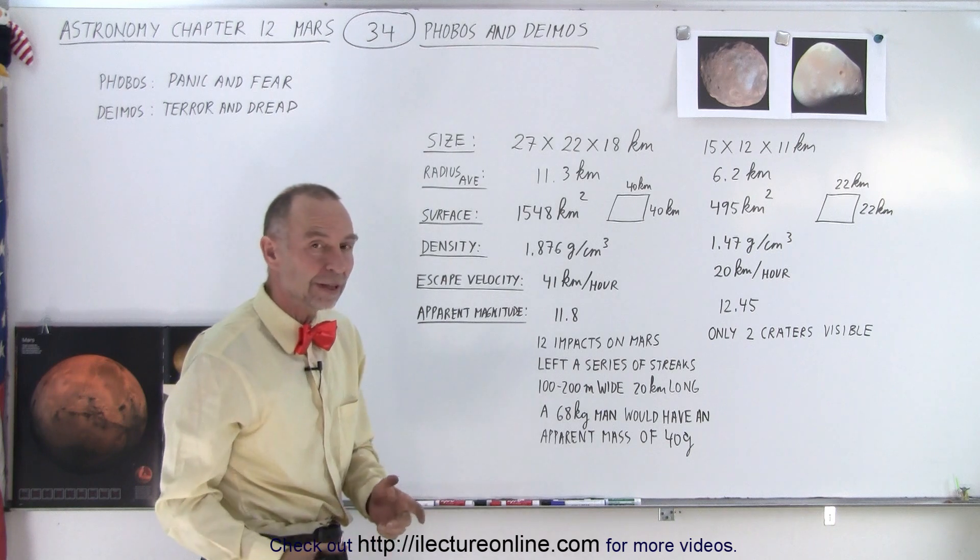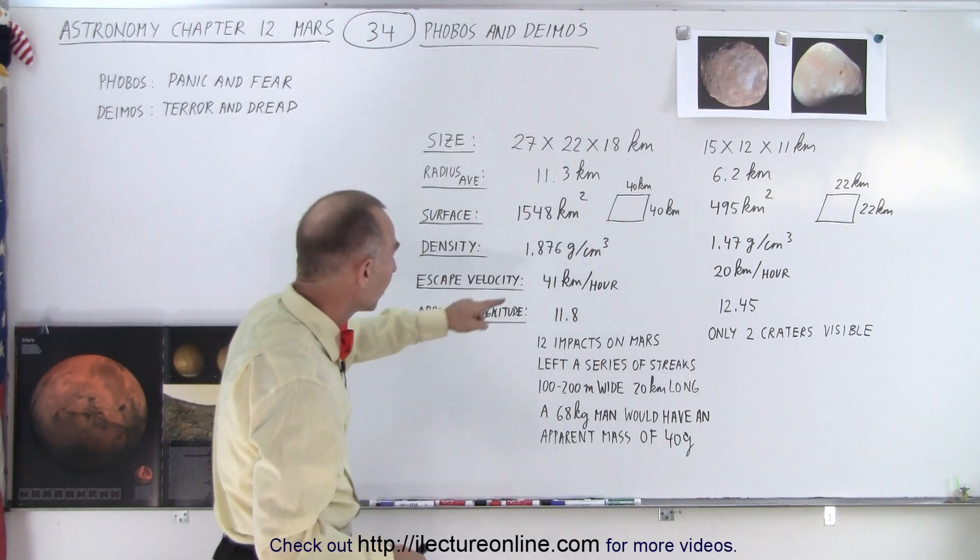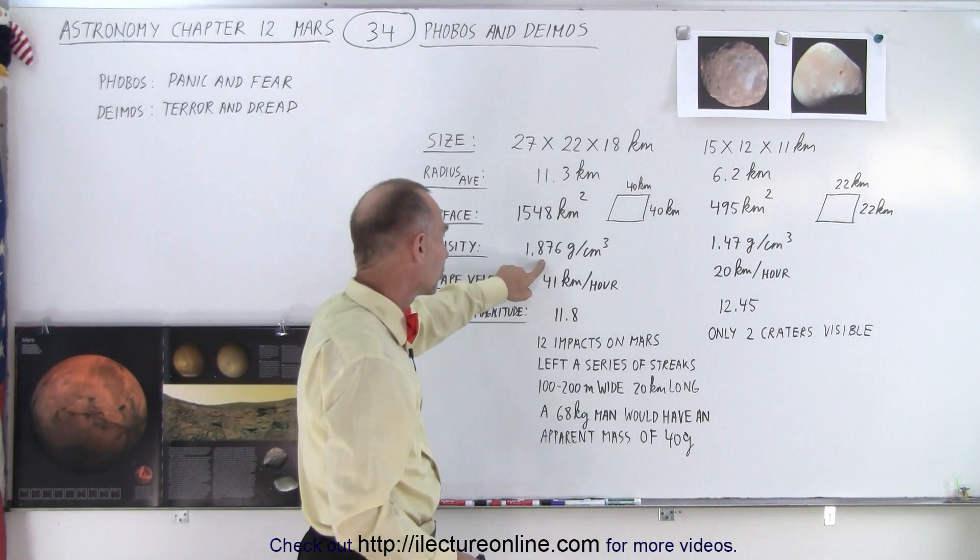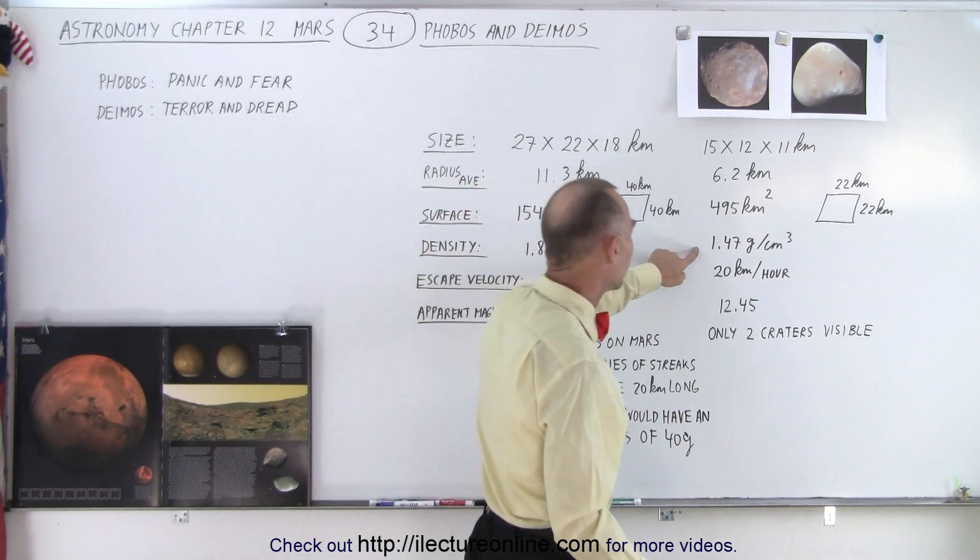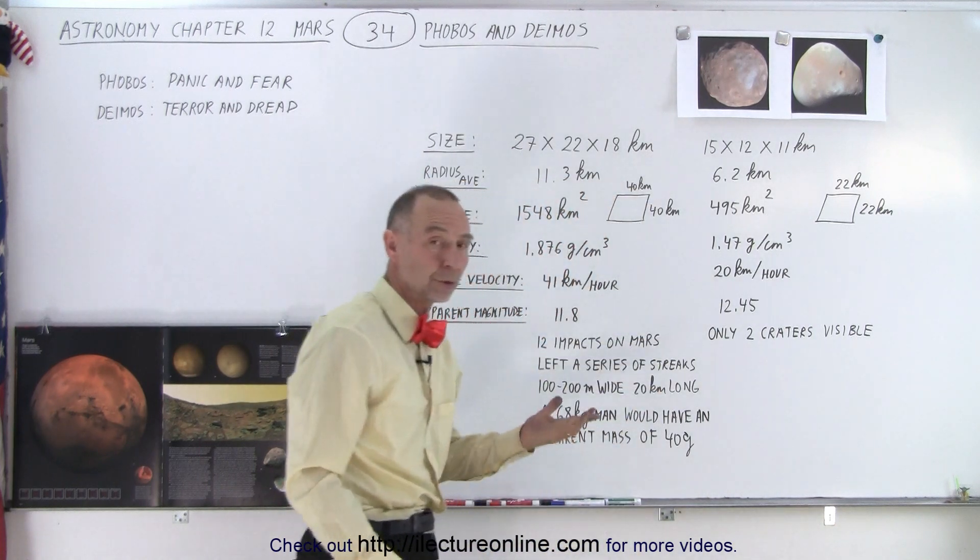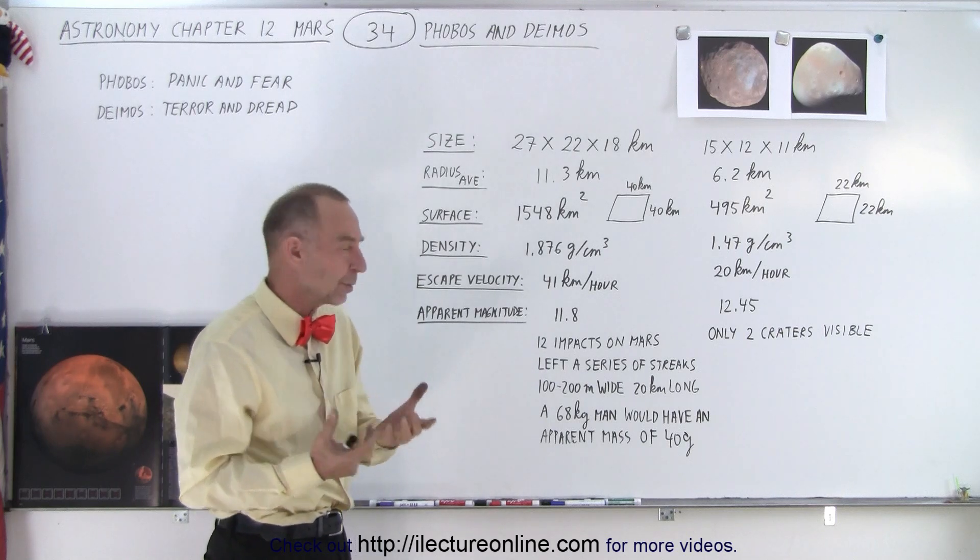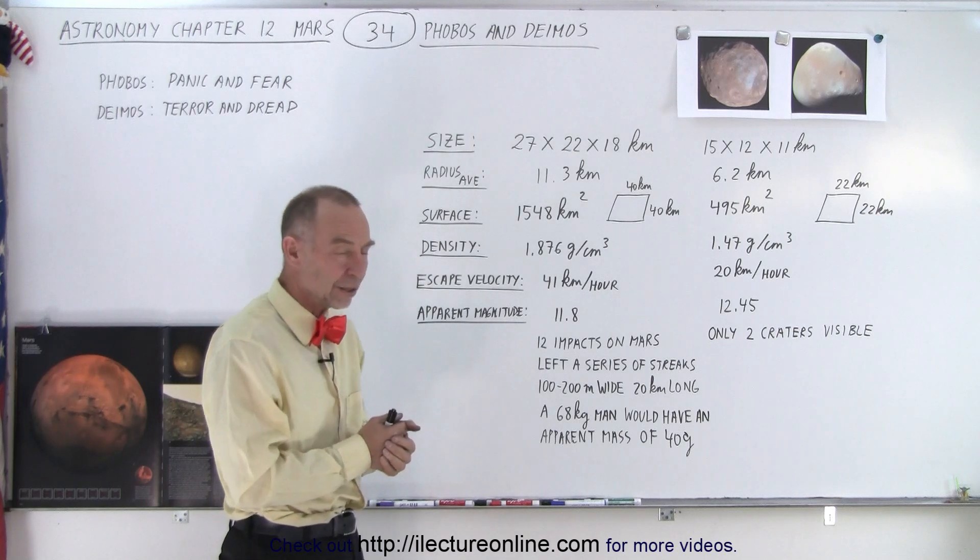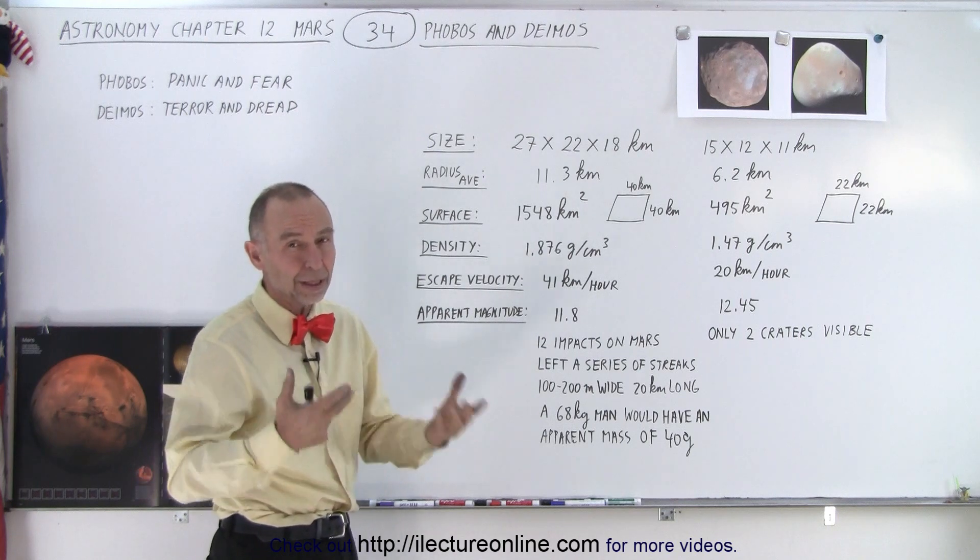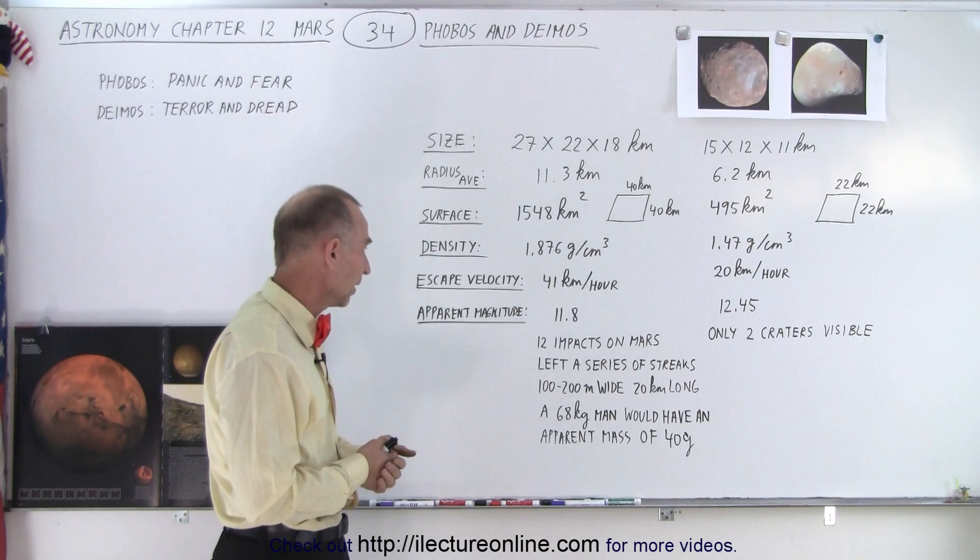Density—surprisingly they're relatively less dense. It's about 1.9 grams per cubic centimeter for Phobos and 1.5 grams per cubic centimeter for Deimos, which means they're not all made out of rock. If they were purely made out of rock, their densities would be higher, so it's presumed that they probably are combined with some water ice.